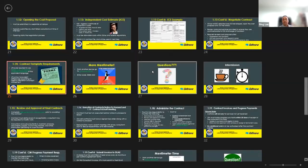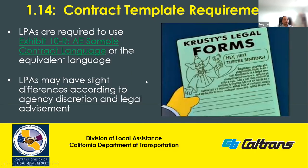For the contract agreement document itself, we have a boilerplate sample agreement in Exhibit 10R of the LAPM. The agency can use this as a reference — it contains necessary contract language items — but it will be up to the agency to produce the appropriate final contract language according to the project and work activity. We also recommend that the agency gets advisement from their legal office for the contract agreement.